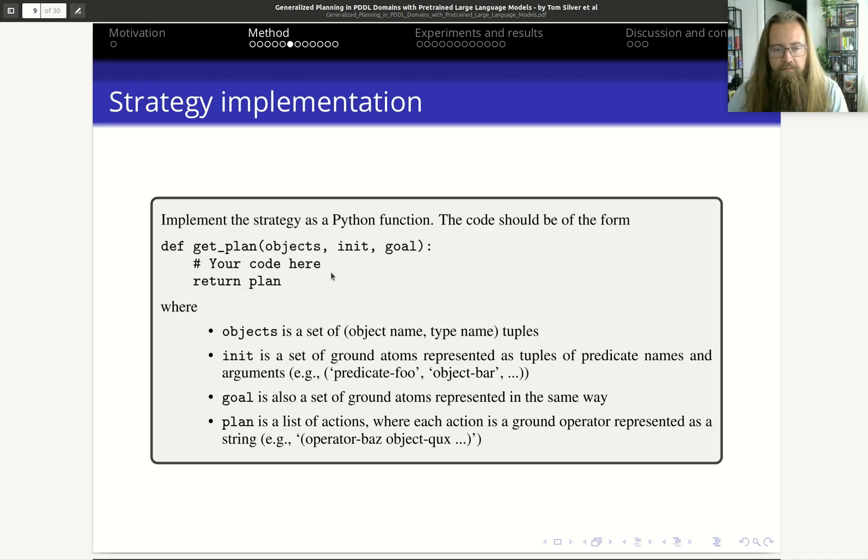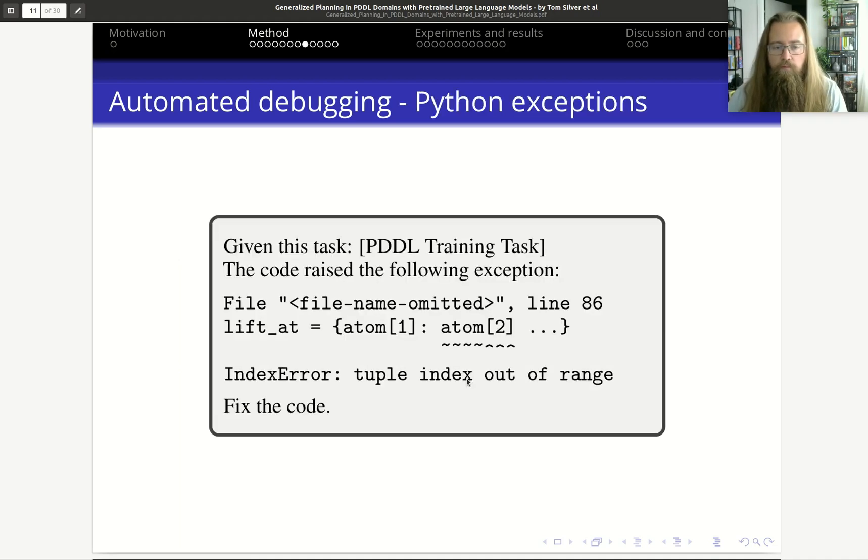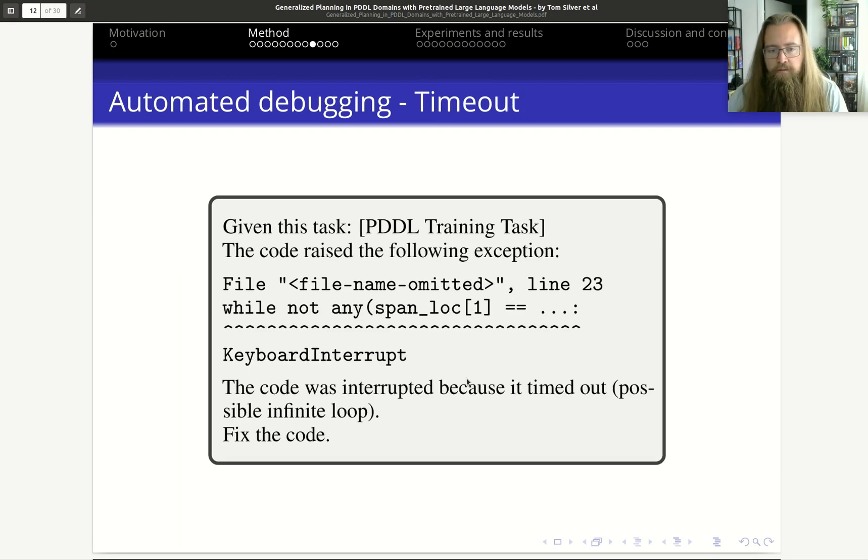For the automated debugging, they execute this get_plan function that the model returns. There are a few different things that can happen: it can return an output or it can crash the program. If it fails, they have four different types of feedback that they re-prompt. The first one is just give the exception to the LLM and say fix the code. The second one is similar - if it's a timeout, then give this specific example.